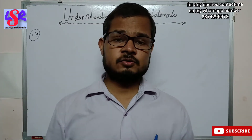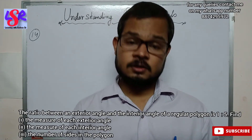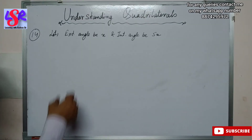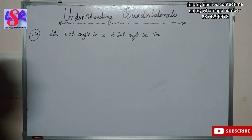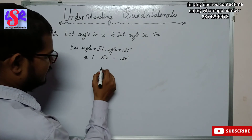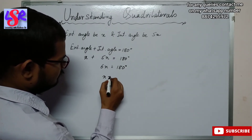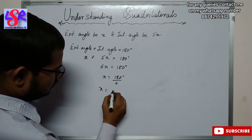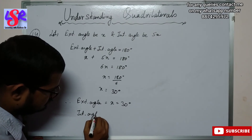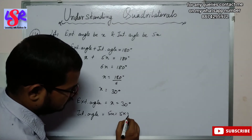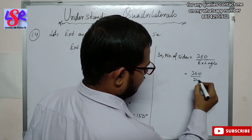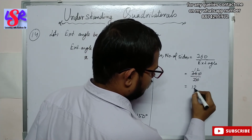In question number 14, the ratio between the exterior angle and interior angle of a regular polygon is 1 to 5. Let the exterior angle be x and the interior angle be 5x. Since their sum is 180 degrees: x plus 5x equals 180, so 6x equals 180 and x equals 30 degrees. The exterior angle is 30 degrees and the interior angle is 150 degrees. The number of sides equals 360 divided by 30, which is 12 sides.